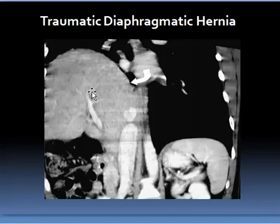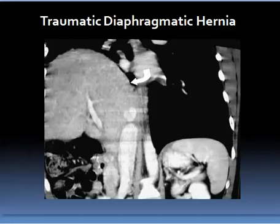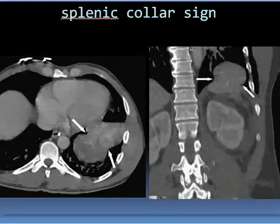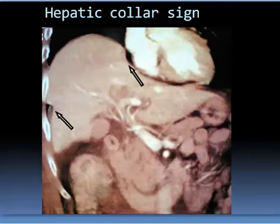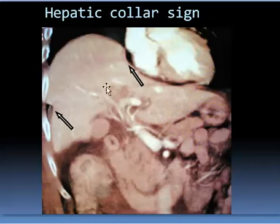There is a marked discrepancy between the level of the diaphragm on the left and that of the right, with the whole stomach seen within the thorax — this is a traumatic diaphragmatic hernia. Sometimes we can see constriction around the spleen, called the splenic collar sign, denoting hiatus rupture. This is the collar sign of the diaphragm, where the waist represents the two separate ruptured leaflets of the muscular parts of the diaphragm.